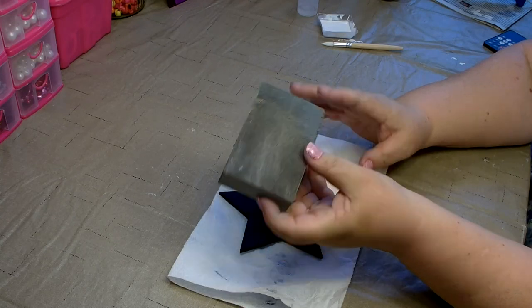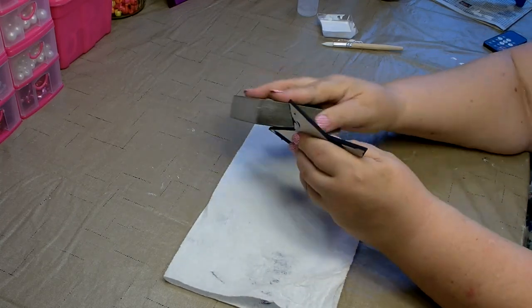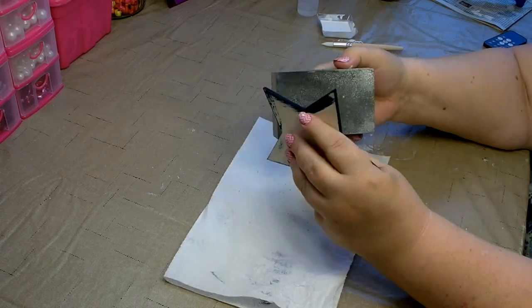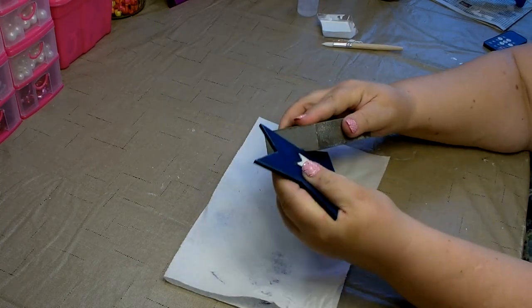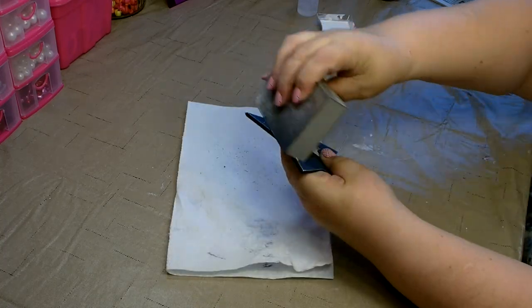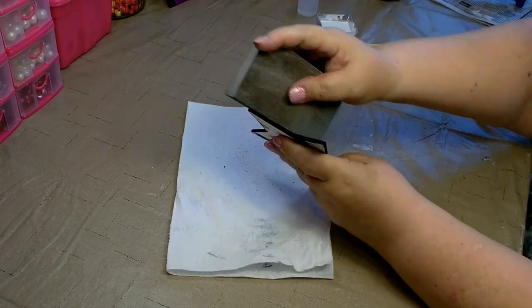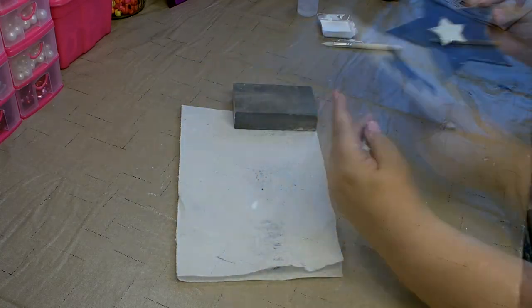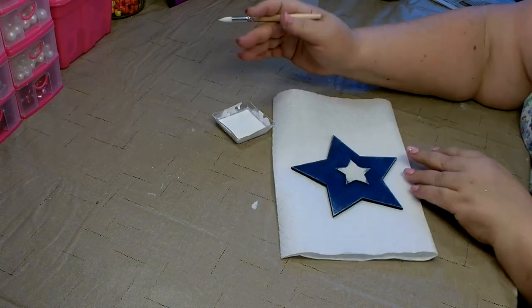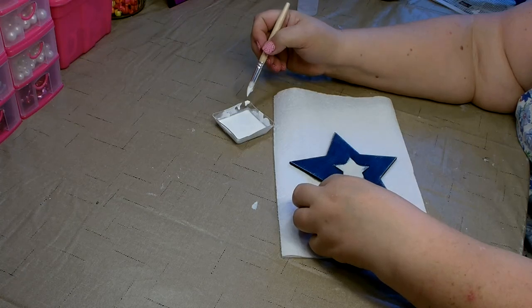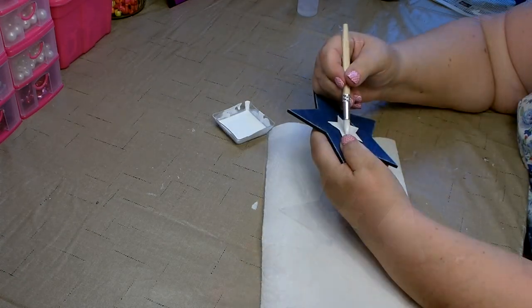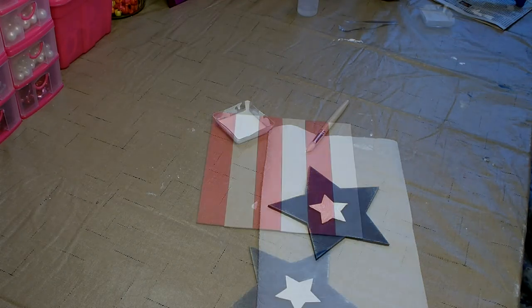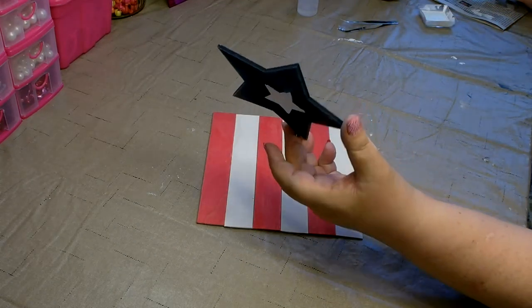You'll want to use your sandpaper to distress the star. Simply use it until you get the desired effect you're looking for. Now paint the small star in the center white. Simply attach the star to the backing with hot glue.